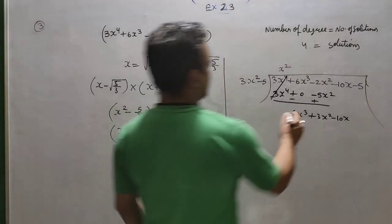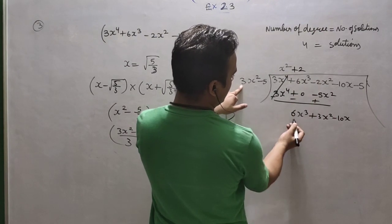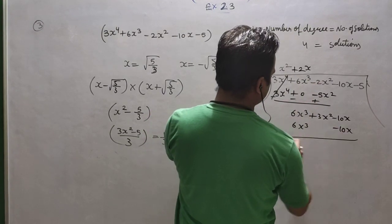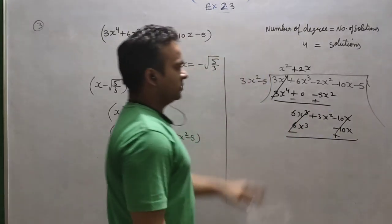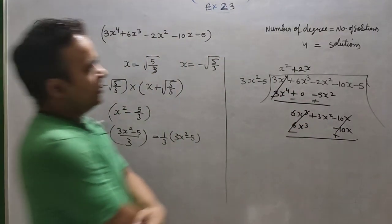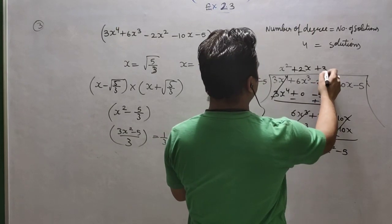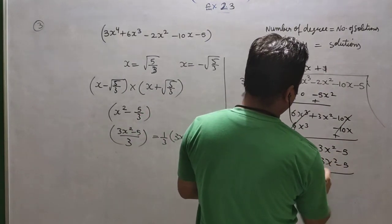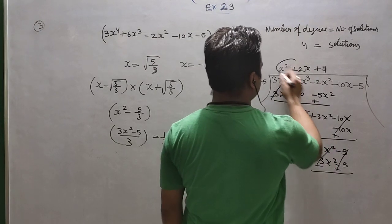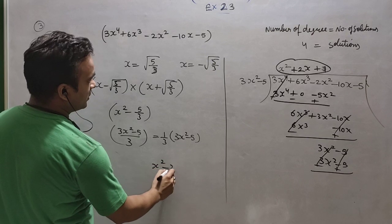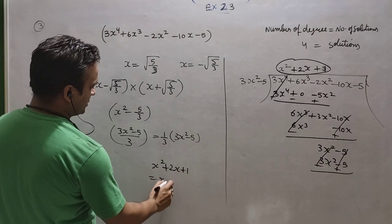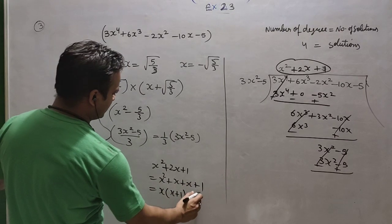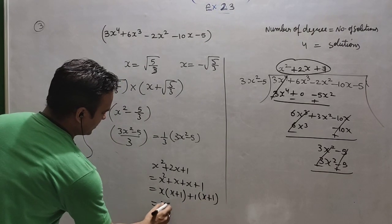Next we multiply 3 by 2 to make it 6, and by x, so it will be 6x cubed, and it will be minus 10x. Minus plus and cancel — we always change the sign. Now what is left is 3x squared minus 5, so we multiply by 1. Already 3x squared is here and 3x squared is here — 3x squared minus 5, minus plus and cancel. So the quotient part is x squared plus 2x plus 1.